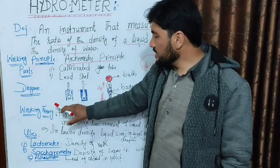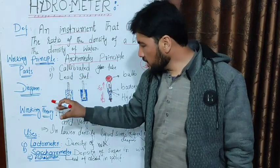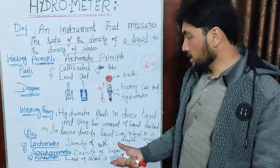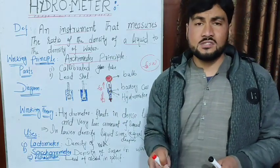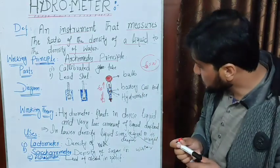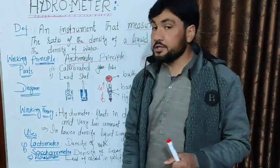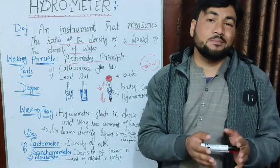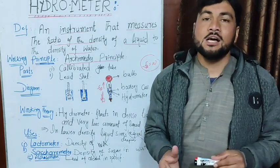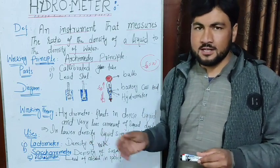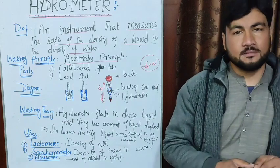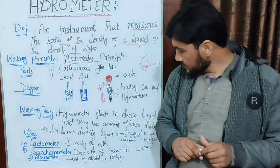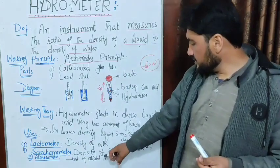If we use lower density liquids, then we use a lot of the liquid. If we use a calibration, we use a lot of water. The density of milk means that there is more water content.